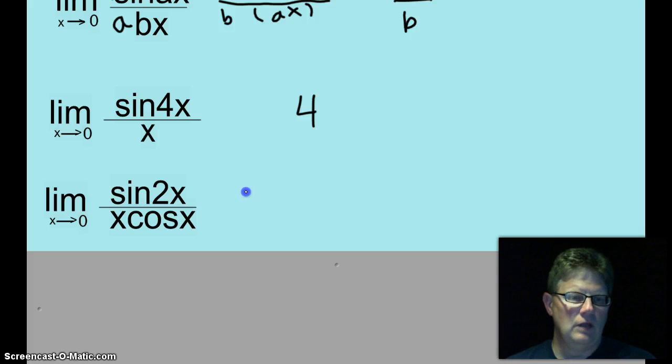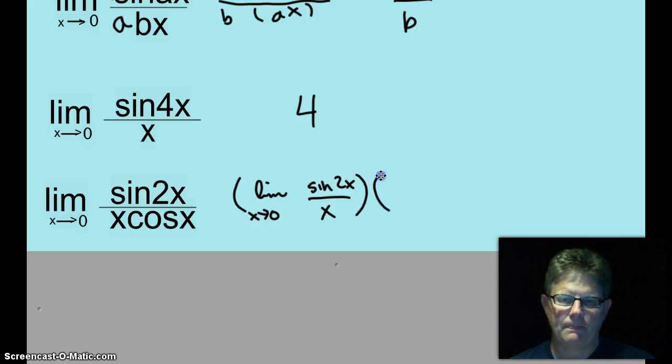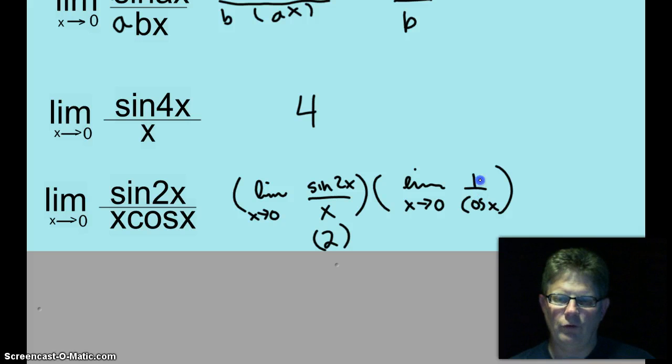This one's not so cool. But it's not that bad. What we're going to do is we're going to separate it up. We're going to do the limit as x approaches zero of sine of two x over x times the limit as x approaches zero of one over cosine x. Now this one, the a is two and the b is one. So that part of the limit is two. Let's go ahead and replace zero in here. One over one. Two times one. That's just two.